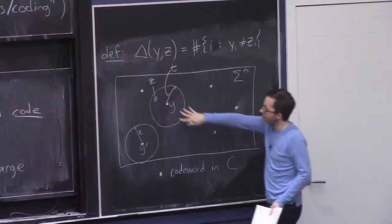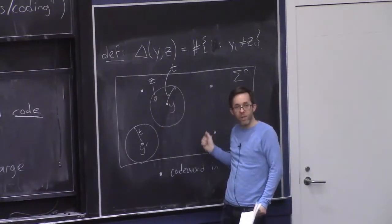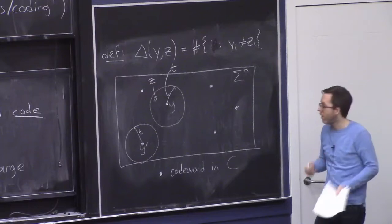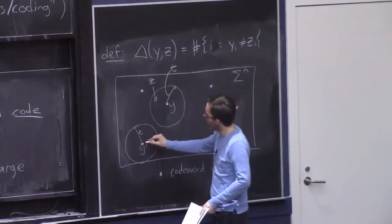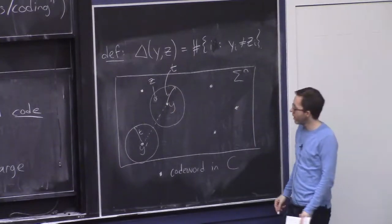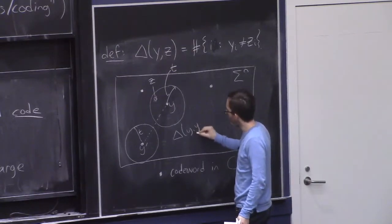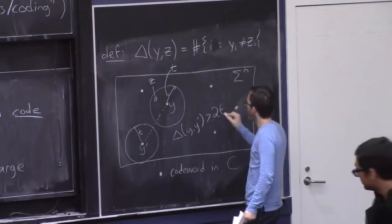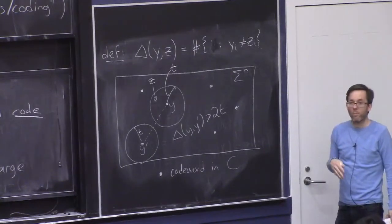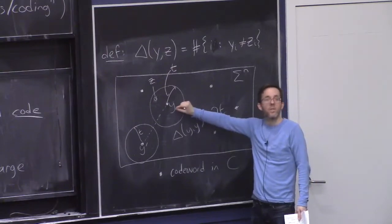And you see what's required for that, for all these hamming balls to be disjoint, is that the centers, in other words, the codewords themselves, should be sufficiently far apart. And how far apart should they be? They should be farther apart than 2T. So what you want to do, given a code, is look at all of the hamming distances between pairs of codewords. Look at the hamming distance between let's say Y and Y prime. And as long as this is bigger than 2T, where T is the expected upper bound, or the upper bound of the number of corruptions we'll receive, then we're in good shape.